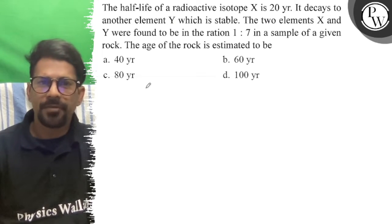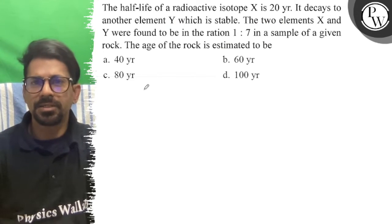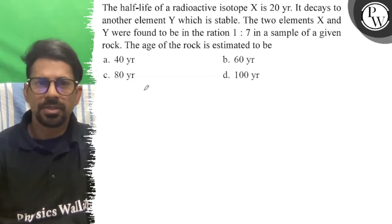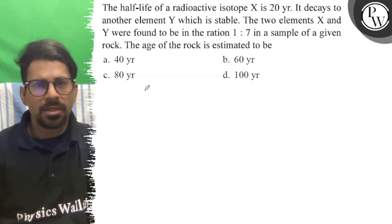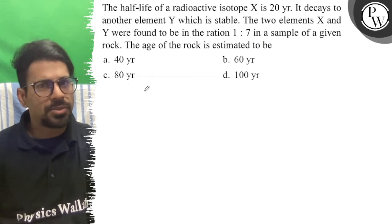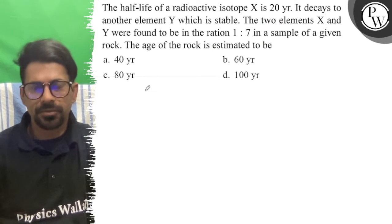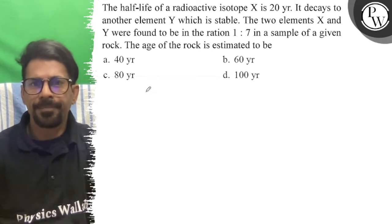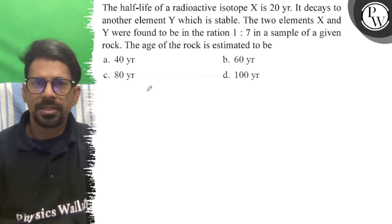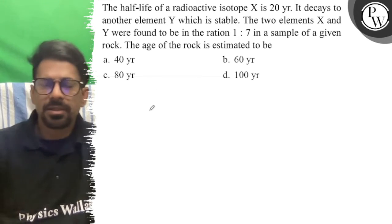The half-life of the radioactive isotope X is 20 years. It decays to another element Y. The two elements X and Y are found in the ratio of 1 is to 7 in a sample of a given rock. The age of the rock is estimated to be?